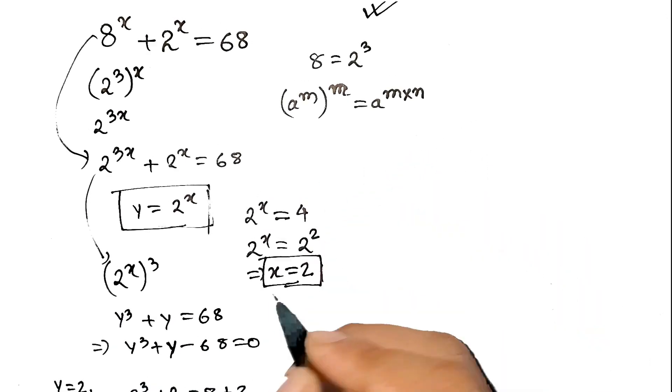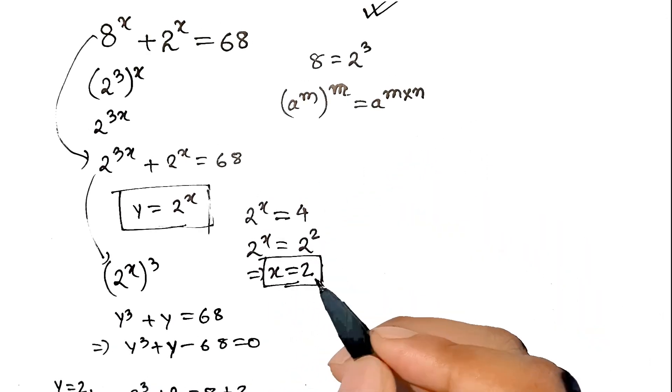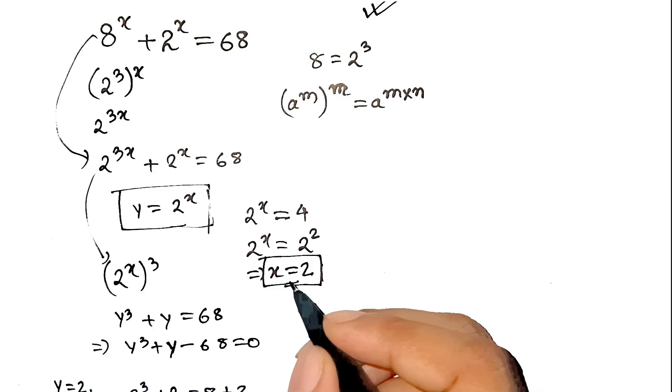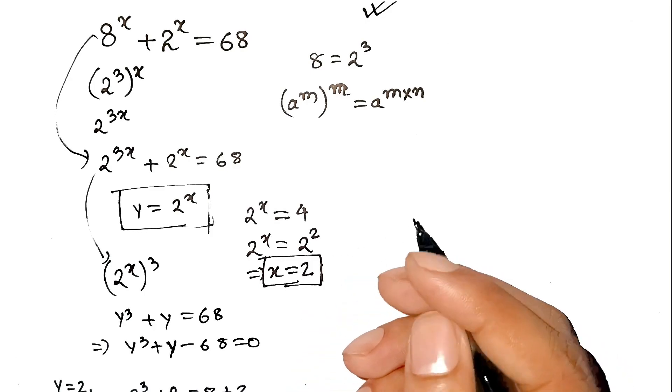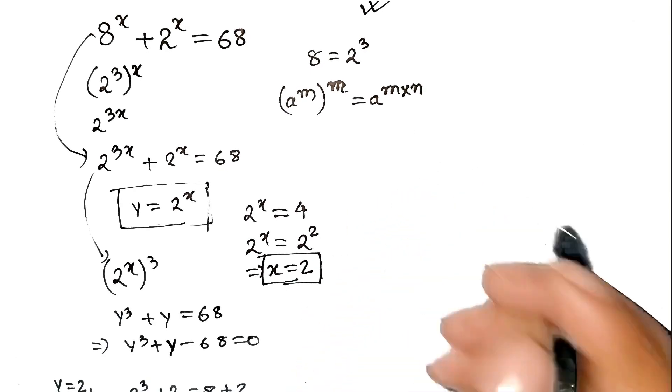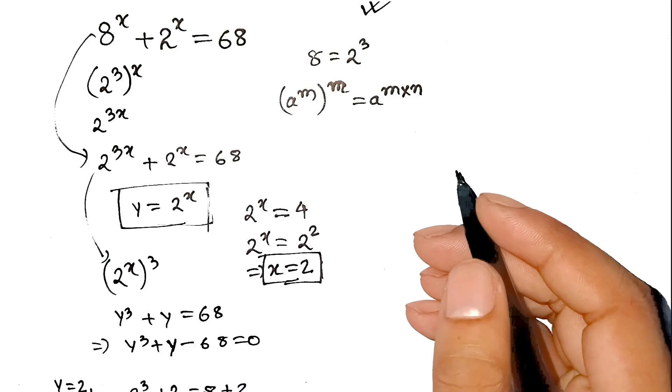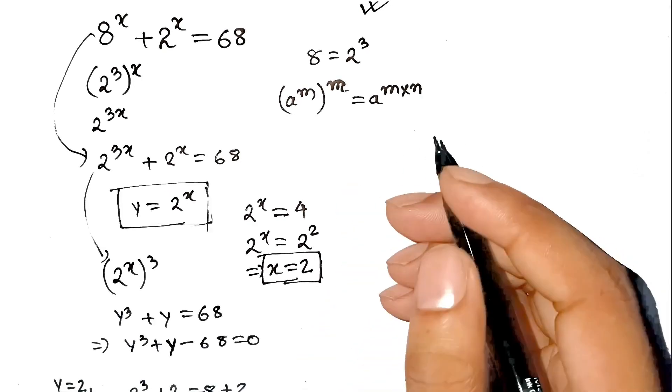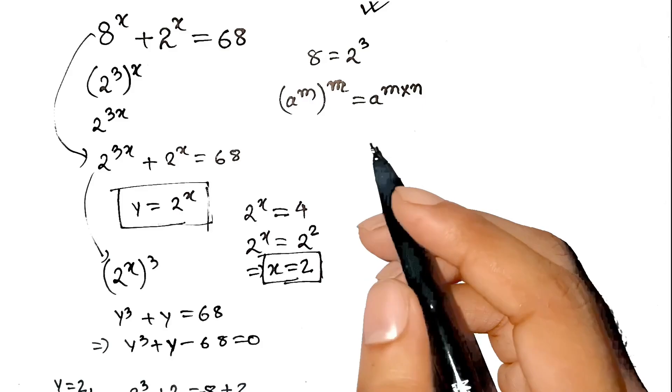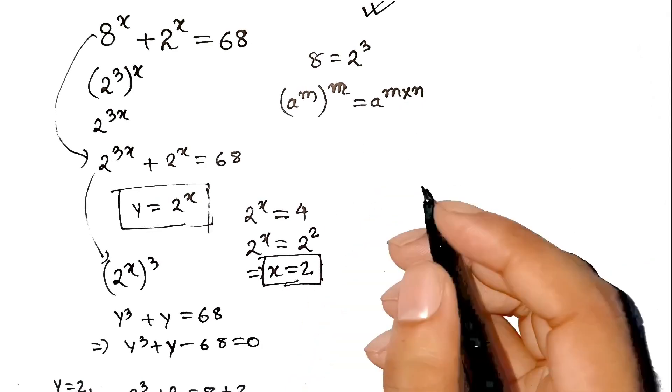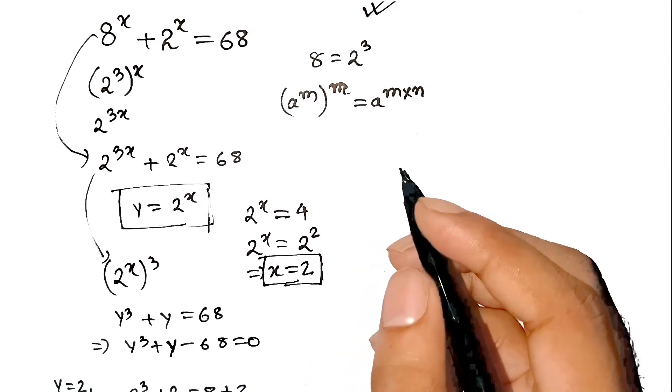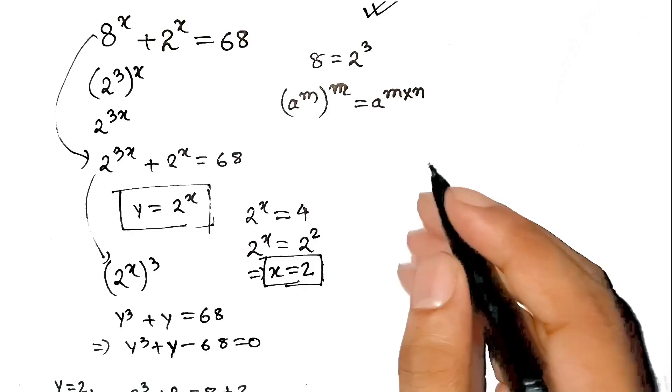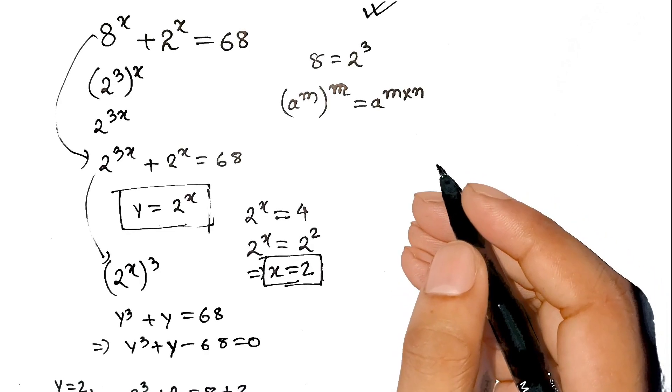Anyway, the final answer is nice and clean. x = 2. Now, if you survived to the end of this explanation, you deserve a medal. Or at least a cookie. And hey, drop a like so YouTube's algorithm knows we're not just doing boring math. We're solving problems with memes, baby. And comment below your favorite math meme. I might use it in the next video. All right, class. That's a wrap. Don't forget. Math doesn't have to be scary. Unless it's trigonometry. Then yeah, it's kind of scary. Peace out.